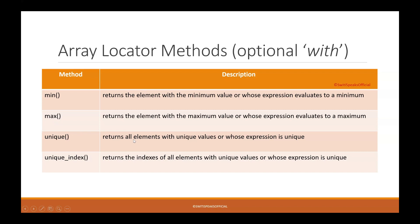Unique returns the elements which have unique value. So say for example in an array, I have a value 1 which is repeating 2 times. This will display that value only once. Then unique_index returns the index of all these unique elements.